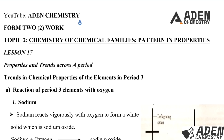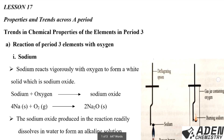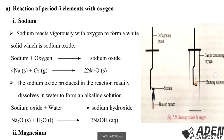Hello students, welcome. Previously in lesson 16 for period 3, we were dealing with properties and trends across a period and we have done trends in physical properties of the elements. Today in lesson 17, we want to proceed to trends and chemical properties of the elements in period 3, and we are going to start with number one: reaction of period 3 elements with oxygen. Remember, in period 3 you have eight elements.